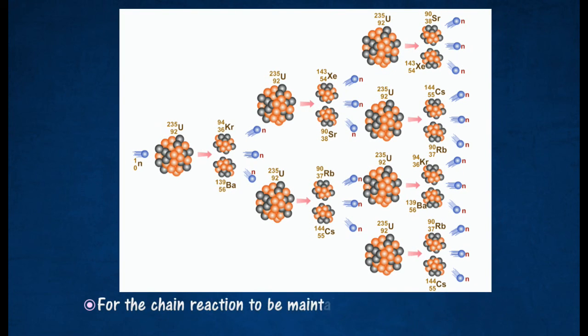For a chain reaction to occur, the mass of the uranium-235 has to exceed a certain value called the critical mass.